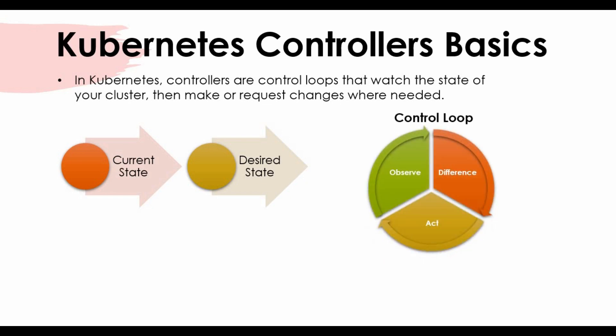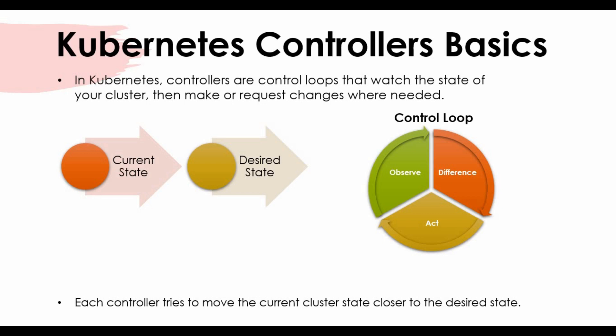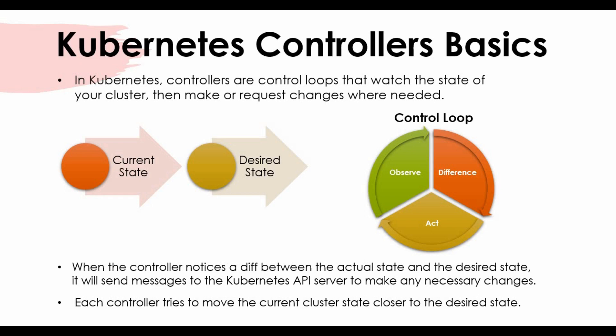The control loop observes your current state and checks the difference between the current state and the desired state you have defined. Based on that, it will act — if there is a difference, it will make changes; if there is no difference, it will not make any changes. Each control loop tries to move your current cluster state closer to the desired state. When the controller notices a difference, it sends a message to the Kubernetes API server to make the necessary change.